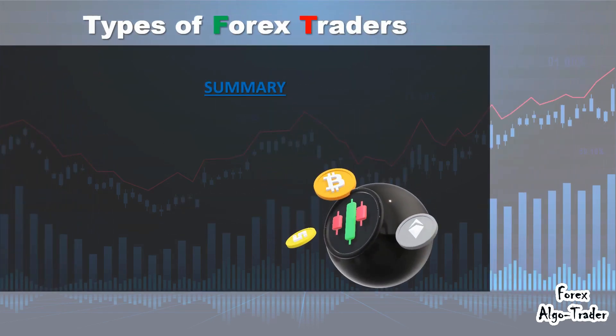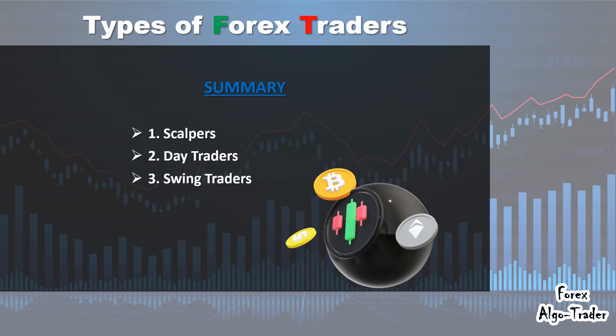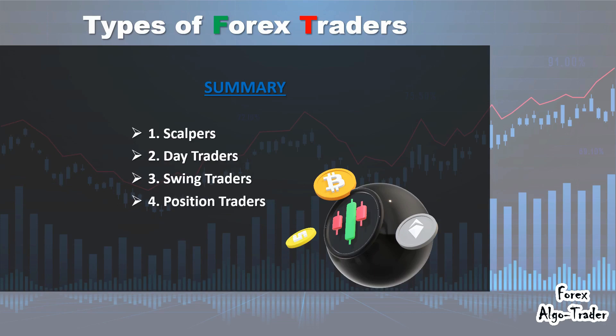In summary, there are four main types of forex traders, which include: 1. scalpers, 2. day traders, 3. swing traders, and 4. position traders.